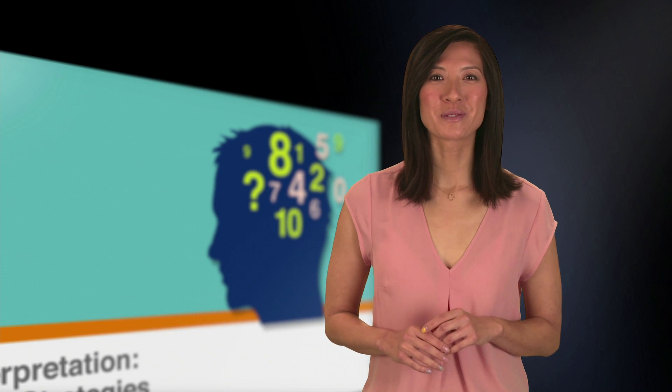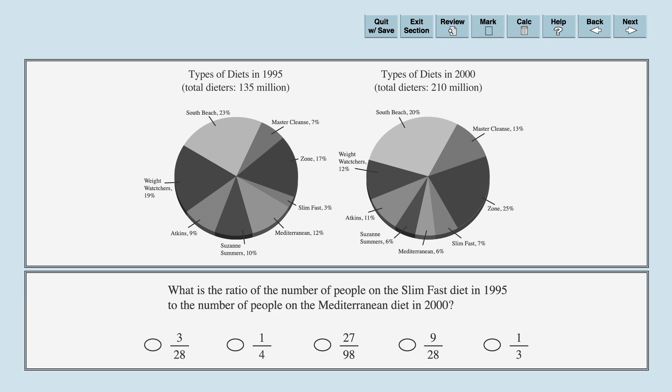Let's look at another question using the same pie charts. What is the ratio of the number of people on the SlimFast diet in 1995 to the number of people on the Mediterranean diet in 2000? The answer choices are 3 over 28, 1 over 4, 27 over 98, 9 over 28, and 1 over 3.